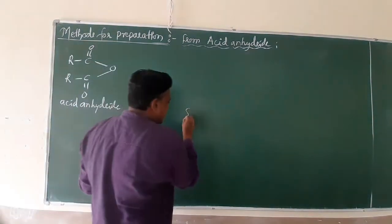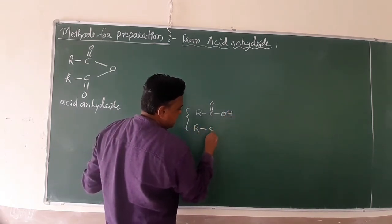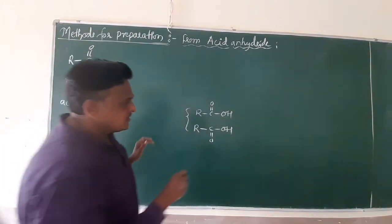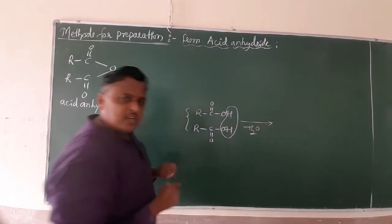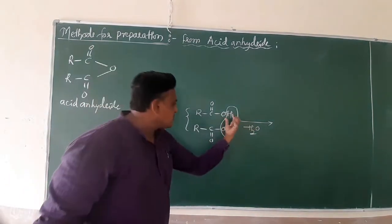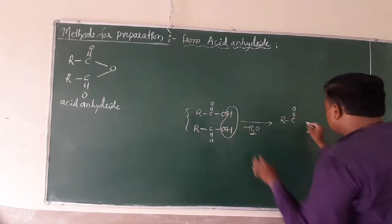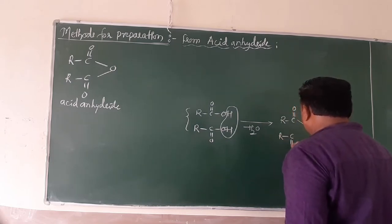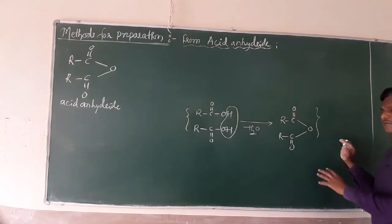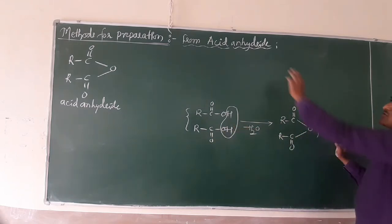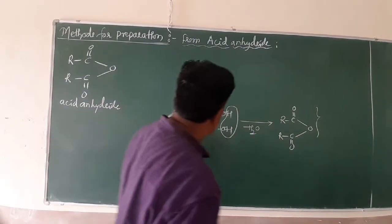Acid anhydride is prepared by taking 2 moles of carboxylic acid and subjecting them to dehydration — removing water. What remains is R-C(=O)-O-C(=O)-R, your acid anhydride. That is why it is called 'anhydride' — anhydride means removing the water.